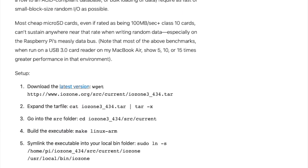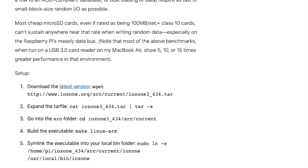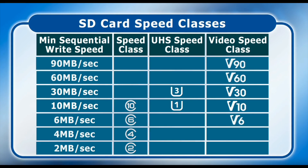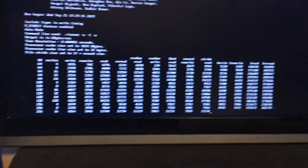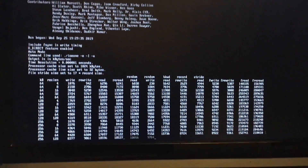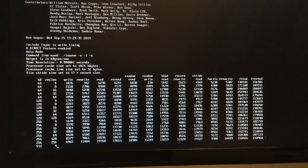Going back to Christopher's work for a minute — these are slides from his video, linked below — he goes through all the different classifications of cards and what they're supposed to mean for data transfer rate. Unfortunately, that doesn't really apply when you're running an operating system off of a card and doing random, very small, fragmented data reads and writes. Those are the tests I really focused on, and this took forever.